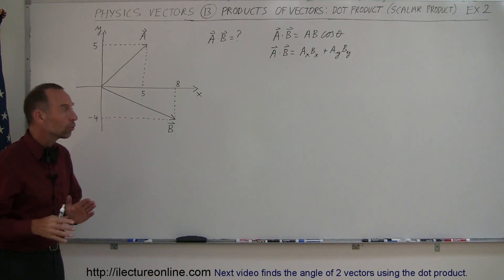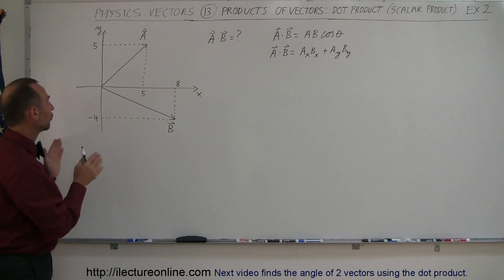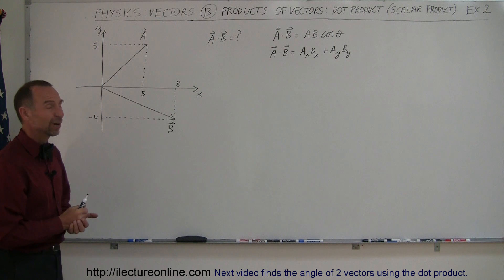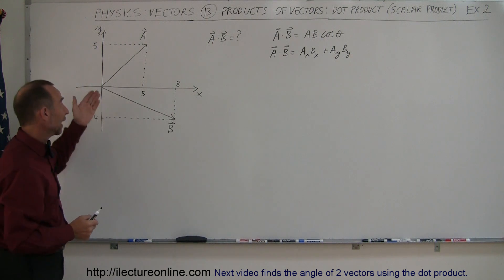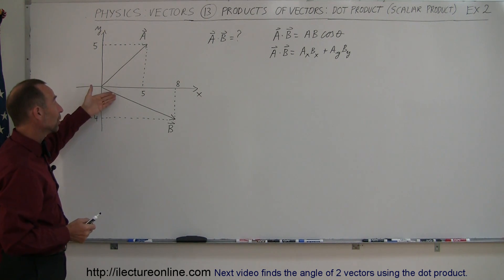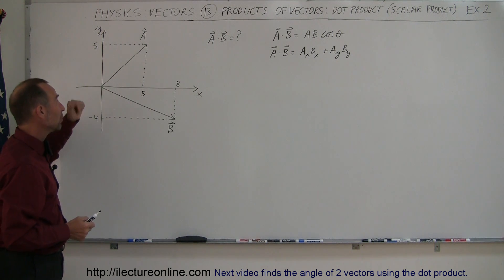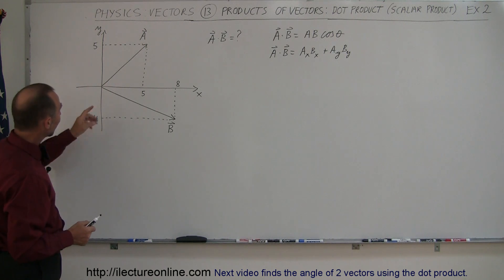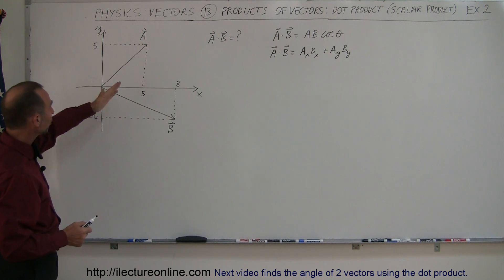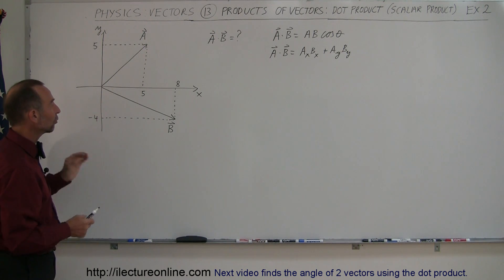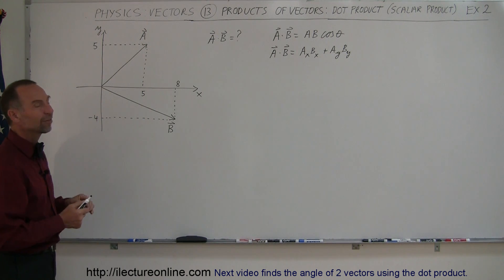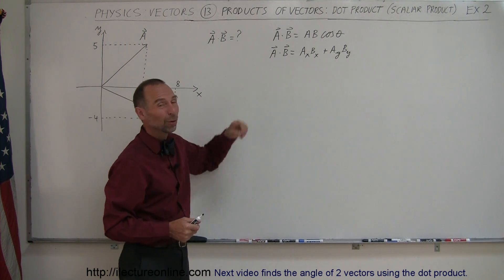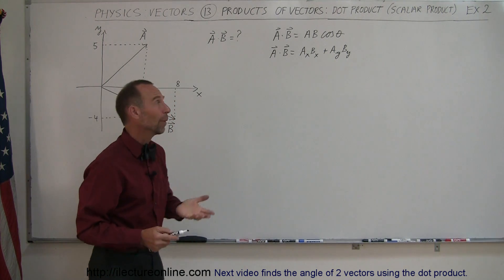Which of those two methods would you prefer to use in this case? Well, we're not given the angle between the two vectors and we're not given the magnitudes, but we are given the components of the two vectors from the way this is drawn out. So the second method would be the preferable way.